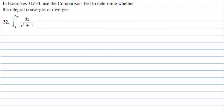In exercises 31 and 34, use a comparison test to determine whether the integral converges or diverges. Looking at 1 over (x cubed plus 1): we have 1 over (x³ + 1) ≤ 1 over x³. A bigger denominator gives a smaller number, so 1 over (x³ + 1) is bounded above by 1 over x³.